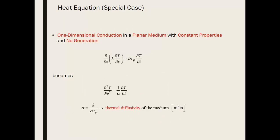Here is a simplified form of the heat equation in Cartesian coordinates assuming one-dimensional conduction (only the x dimension matters), a planar medium, constant properties, and no generation. If thermal conductivity k is constant and not a function of temperature, it can be pulled outside the derivative, simplifying the equation considerably.